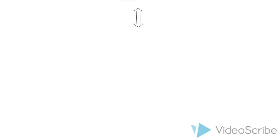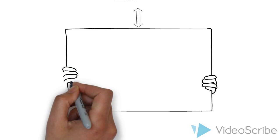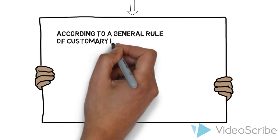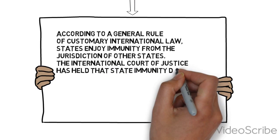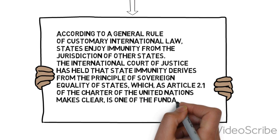What is exactly jurisdictional immunity? Let's give a brief definition. According to a general rule of customary international law, states enjoy immunity from the jurisdiction of other states. The International Court of Justice has held that state immunity derives from the principle of sovereign equality of states, which, as Article 2.1 of the Charter of the United Nations makes clear, is one of the fundamental principles of the international legal order.